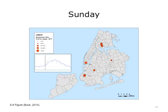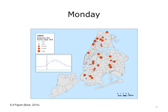This map shows the distribution of ILI in NYC on Sunday, May 17. Being Sunday, many clinics were closed. Then on Monday, May 18, we see many more clinics with over 20% ILI.